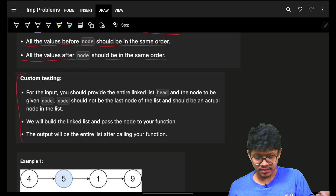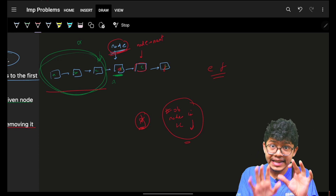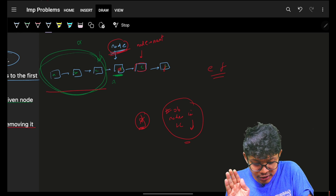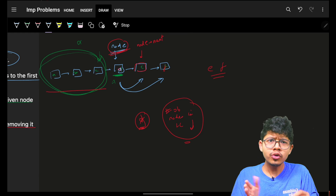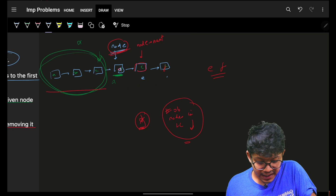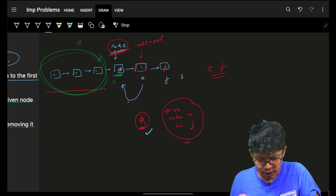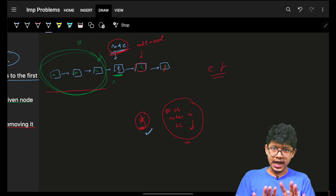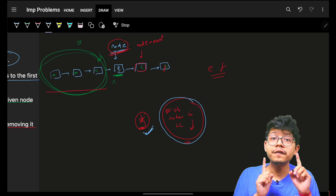Since we don't want the value 'd' at this node, we can place any other value here. Since we can only access forward elements, we place the next node's value — 'e' — at the current node's position. Now the value 'd' is no longer there. We also need to remove one node from the linked list to reduce the count.